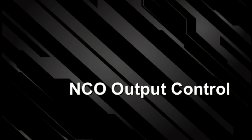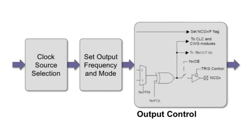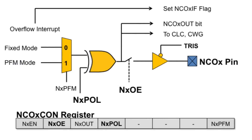Now we'll cover how to control the output modes. There are several output setup options handled by several different registers. The output can be connected to an I/O pin or connected internally to another peripheral in the PIC MCU device. The output can also be inverted. The NCO output can be connected to the NCO I/O pin, allowing connection to circuitry outside of the microcontroller. Setting the NCO output enable bit to 1 connects the NCO output to the I/O pin.